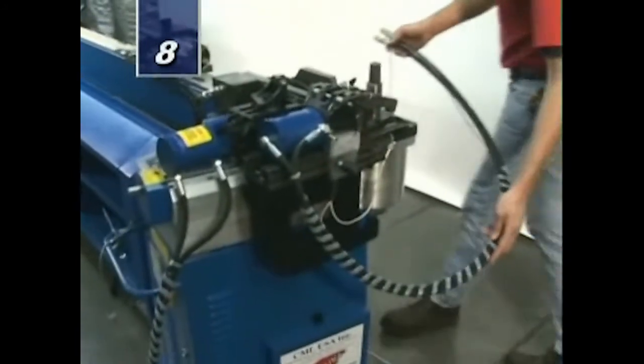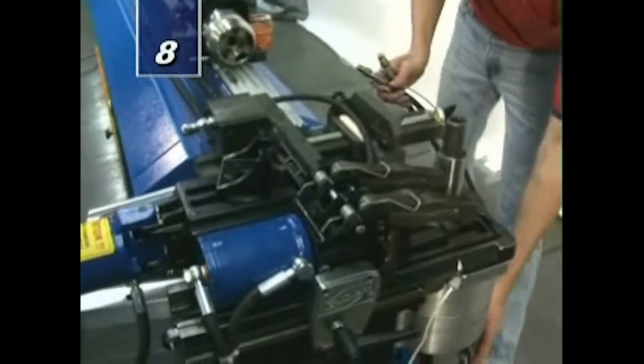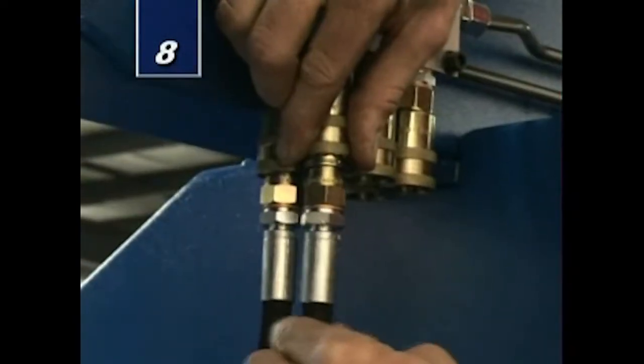Next, attach hydraulic hoses 1 and 2 to distribution block. Route these hoses around right-hand side of machine as shown.